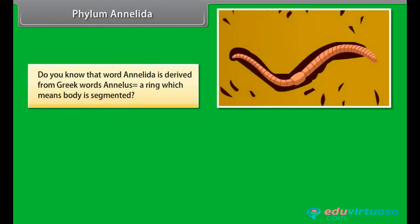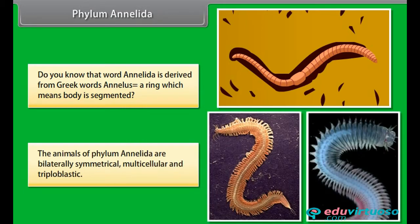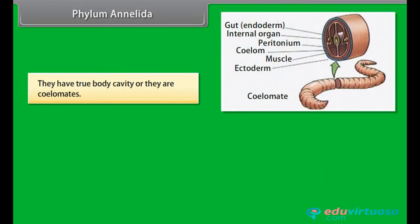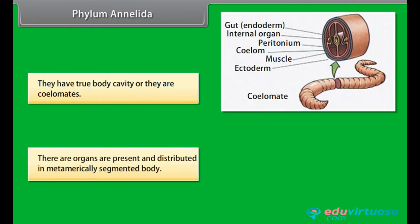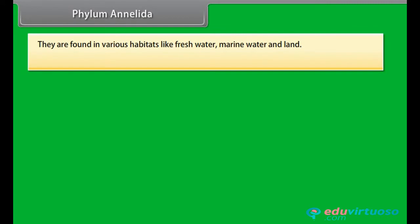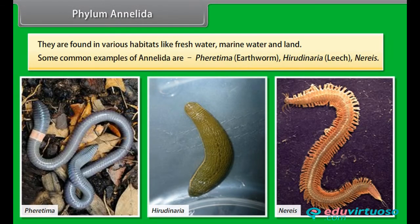The word Annelida is derived from Greek word annelus, meaning ring, which means body is segmented. The animals of phylum Annelida are bilaterally symmetrical, multicellular, and triploblastic. They have true body cavity, so they are coelomates. There are organs present and distributed in a metamerically segmented body. They are found in various habitats like freshwater, marine water, and land. Some common examples of Annelida are Pheretima, earthworm, Hirudo, leech, and Nereis.